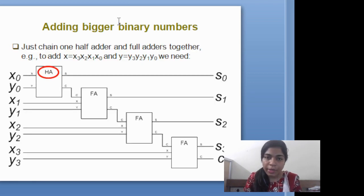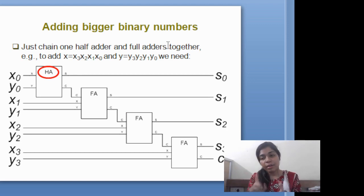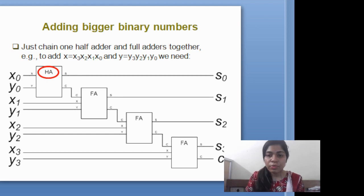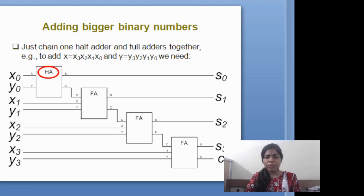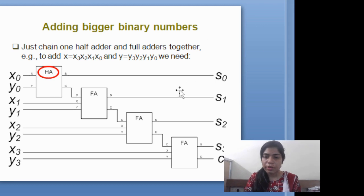This is adding bigger binary numbers. If I want to add more than three or four digits, I need a full adder — a series of full adders. If I am using three full adders and one half adder, then I can add up to a five-digit number.